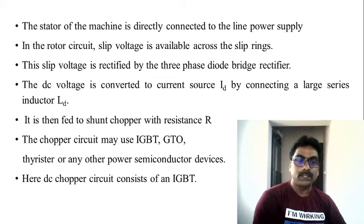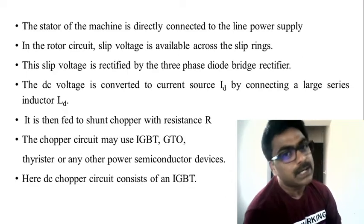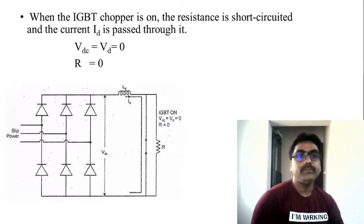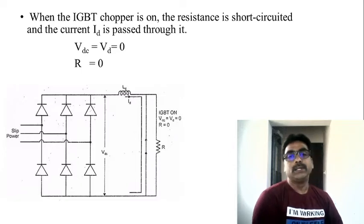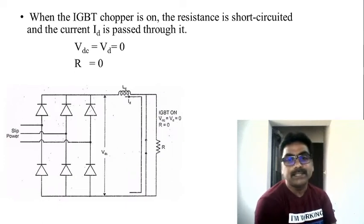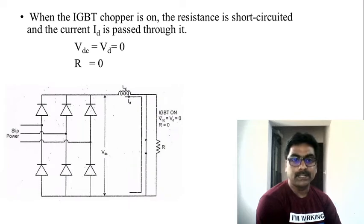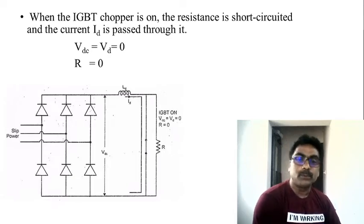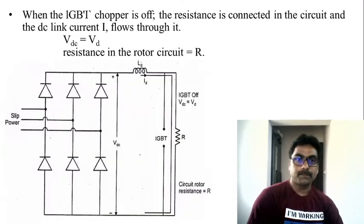Different types of power electronic switches are used in the chopper circuit: IGBT, GTO, and thyristor; BJT and MOSFET can also be used. This figure shows what happens when the chopper switch is ON: the circuit becomes short-circuited and current flows through the switch, so the net resistance is zero because no voltage appears across the resistor — V_DC equals V_D equals zero.